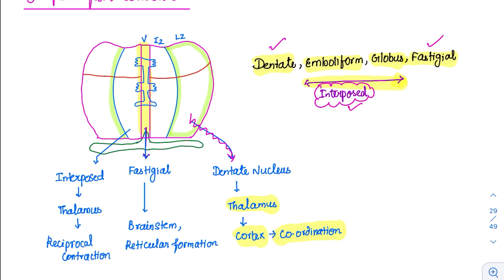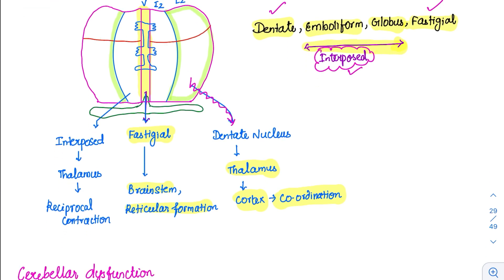The vermis gives output to the fastigial nucleus, which is involved in brainstem and reticular formation. Its most important function is axial muscle control, and the flocculonodular lobe is also involved, primarily for cerebellar balance along with the vestibular system. The intermediate zone — just remember 'I for I' — gives impulses to the interposed nucleus, which goes to the thalamus and is involved in reciprocal contraction. For example, during an ongoing action, the agonist muscle contracts and the antagonist relaxes — this is reciprocal contraction, controlled by the interposed nucleus, and since it comes from the intermediate zone, it controls most distal muscle movements.